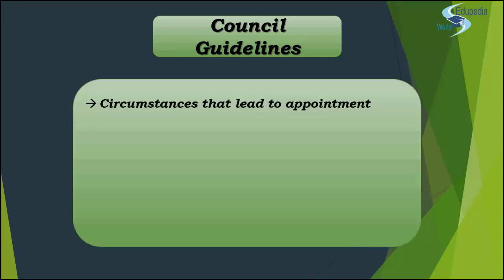We know you have to ascertain whether Sections 139, 140, 141 and 142 have been complied with. But how do you ascertain is the question now. Today we will discuss your course of action and the basic requirements you have to fulfill. When we start with the council guidelines, the first thing to understand is the circumstances that lead to the appointment — what circumstances led to your appointment as auditor of a company.